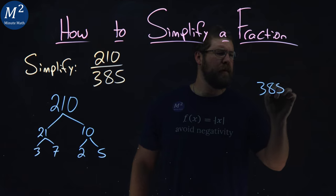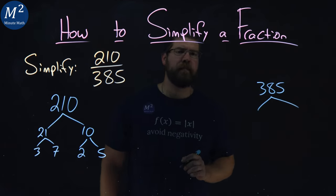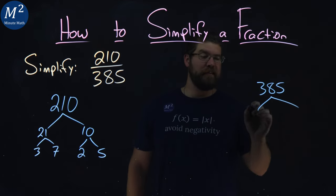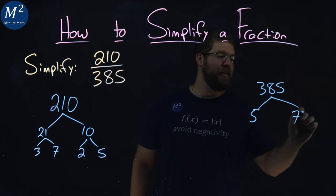Now 385. A little more difficult here. 385 is divisible by 5, it ends at a 5. That ends up to be 77.